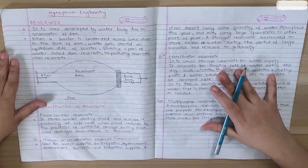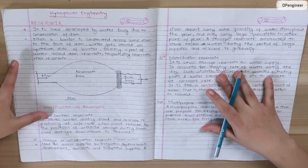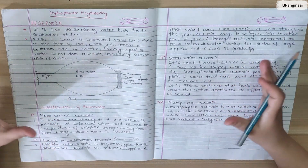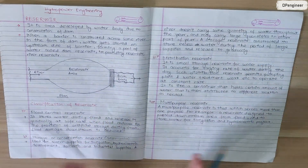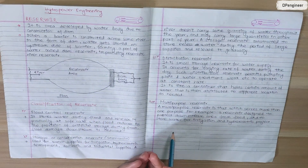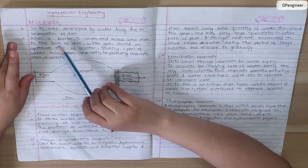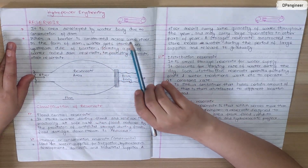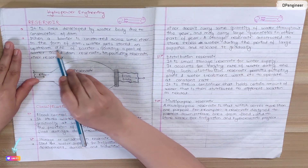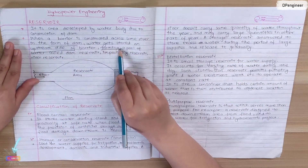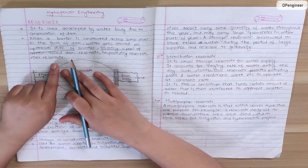I am going to talk about the reservoir and classification of the reservoir. The reservoir is an area where water is stored. It is a structure where water is collected — the area developed by a water body due to construction of a dam. When a barrier is constructed across a river in the form of a dam, water gets stored on the upstream side forming a pool of water called a dam reservoir, impounding reservoir, or river reservoir.